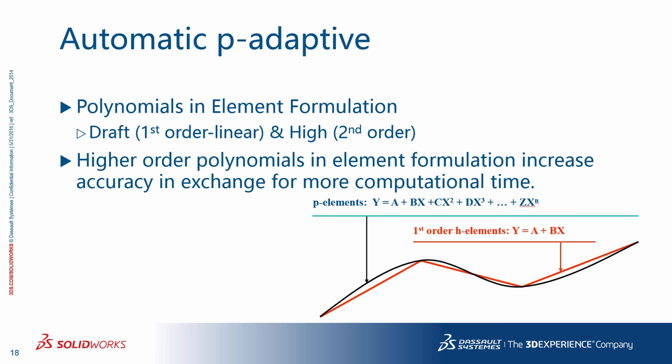The variation y as a function of x can be formulated as a polynomial. Draft quality elements assume a first-order or linear variation; high-quality elements assume second order. The P-adaptive element formulation increases the order of the polynomial to higher orders than two. The higher the order of the polynomial in the element formulation, the more accurate the results, at the expense of more computational time. Also note that increasing the degree of polynomial one order — say from one to two — improves accuracy a lot more than going from, say, four to five.